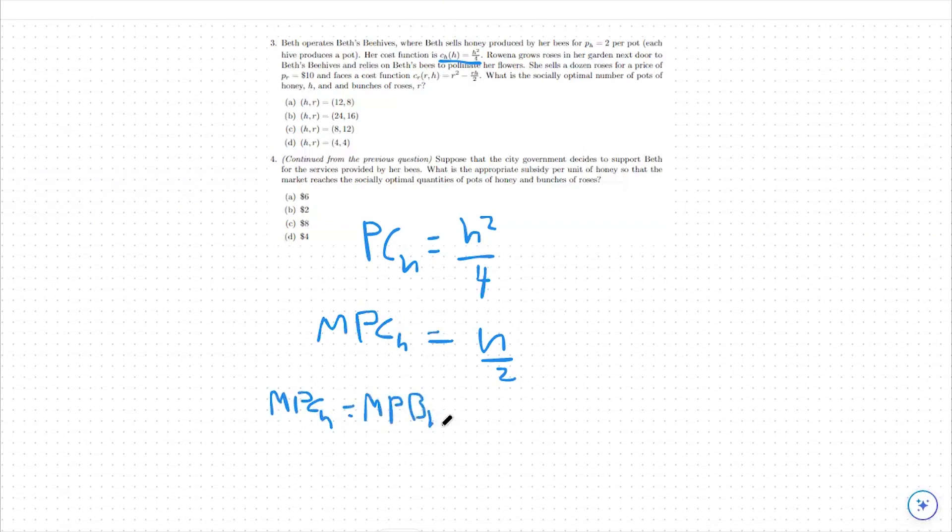In this case, that's going to be the same as the social benefit because the only benefit being received from honey is the $2 value that we receive by selling each honeypot. So we can say that our marginal private cost to selling honey is h over 2. Our benefit is 2.